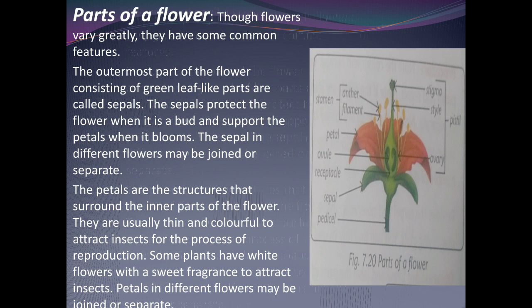Now let's see the parts of the flower. There are many parts of a flower, and though flowers vary greatly, they have some common features. The outermost parts of the flower, consisting of green leaf-like parts, are called sepals. You can see the green colored part in the picture. The sepals protect the flower when it is a bud and support the petals when it blooms. The sepals in different flowers may be joined or separate.